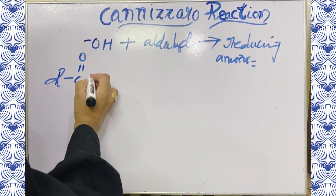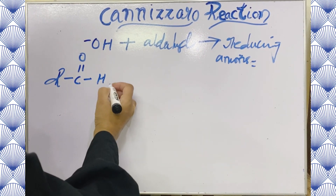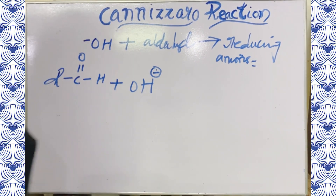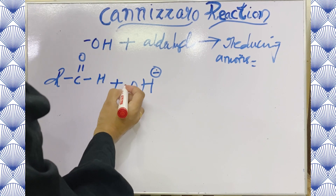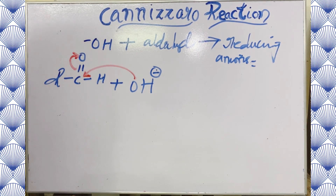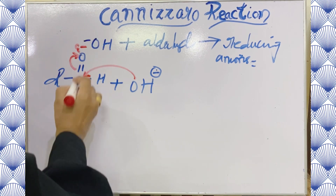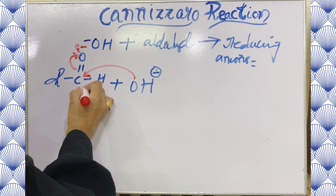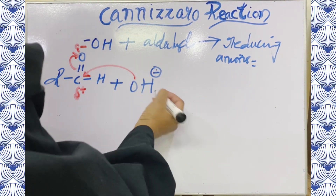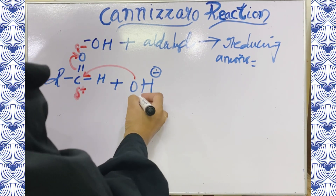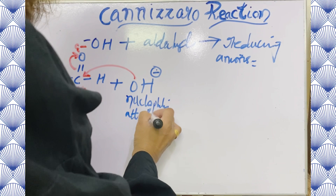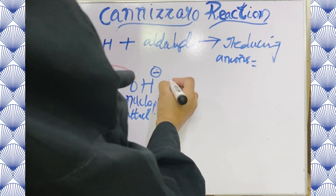We start with R-C-O-H, and you are going to react it with a hydroxide ion. The hydroxide ion will simply attack this carbon, and with the result these electrons move towards the oxygen. The oxygen will carry a partial negative charge and the carbon will be left with a partial positive charge. This is a nucleophilic attack on the carbon of the aldehyde group.